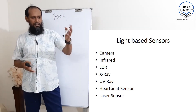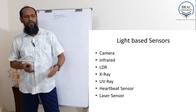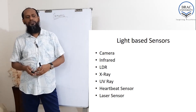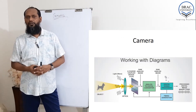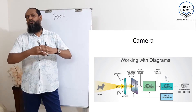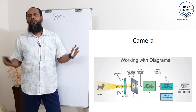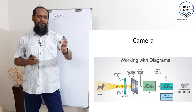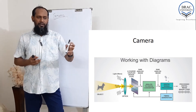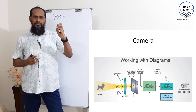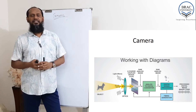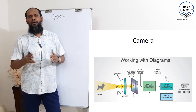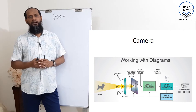For light-based sensors, the first category includes camera, infrared, LDR, X-ray, UV ray, heartbeat sensor, and laser sensors. Let us discuss the camera first — it is the most commonly used sensor. We can see in this figure the sensing part is the CCD — charged coupled device. Sony built this CCD and it was a major revolution in the technological world.